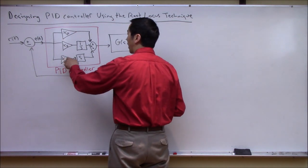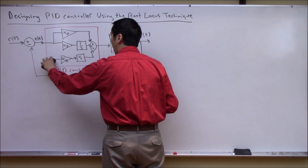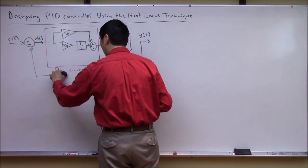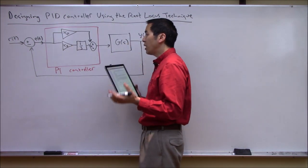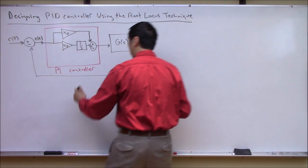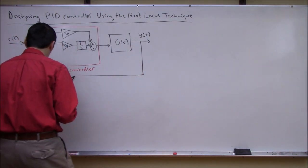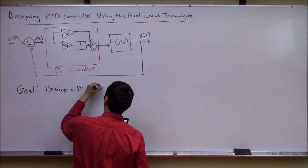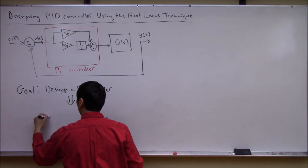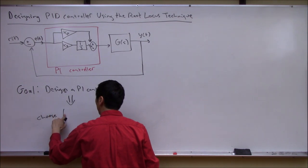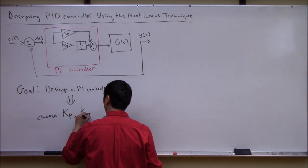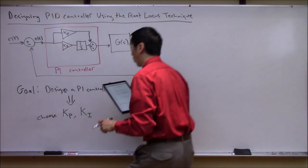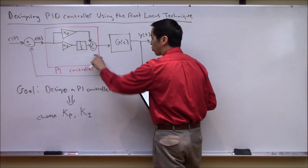Let's walk before we run — let's get rid of the derivative section and consider designing a PI controller. The goal of this subsection is to design a PI controller, which means we need to choose two degrees of freedom: KP and KI. That's our job as control systems engineers — to choose KP and KI to get reasonable performance.